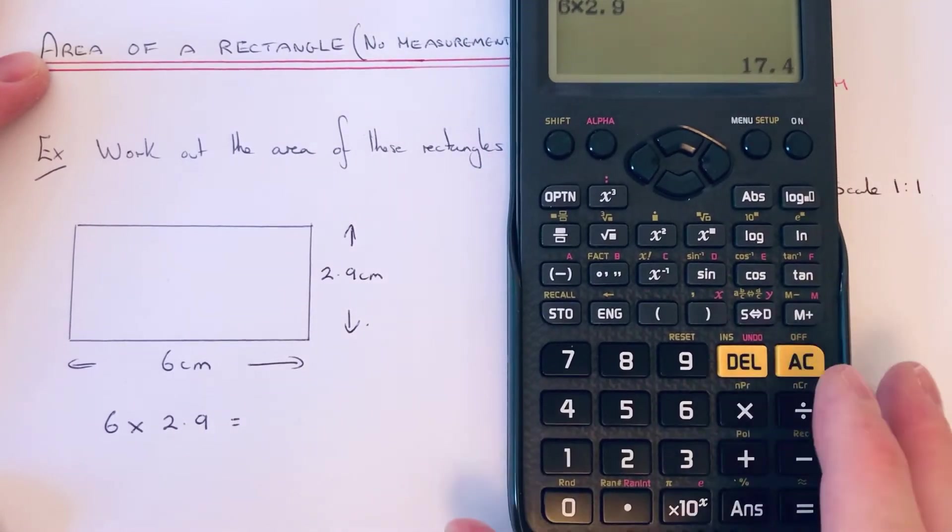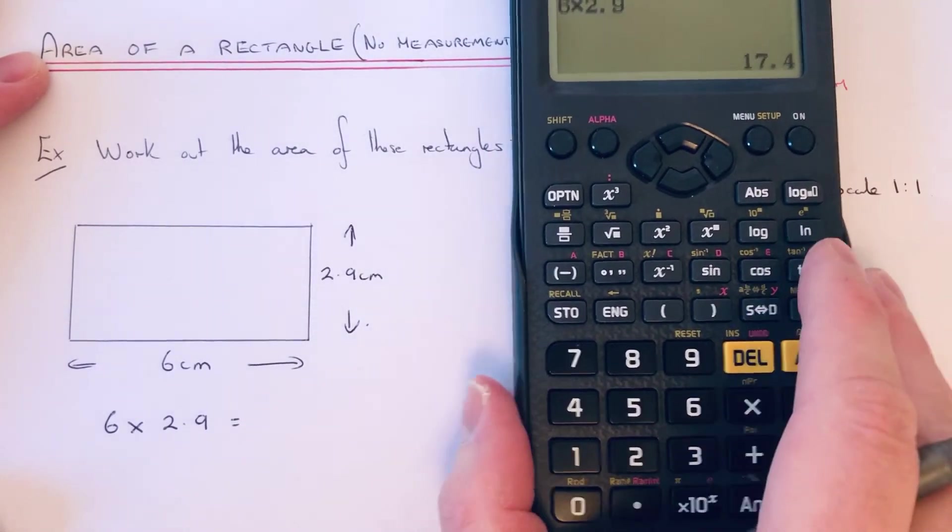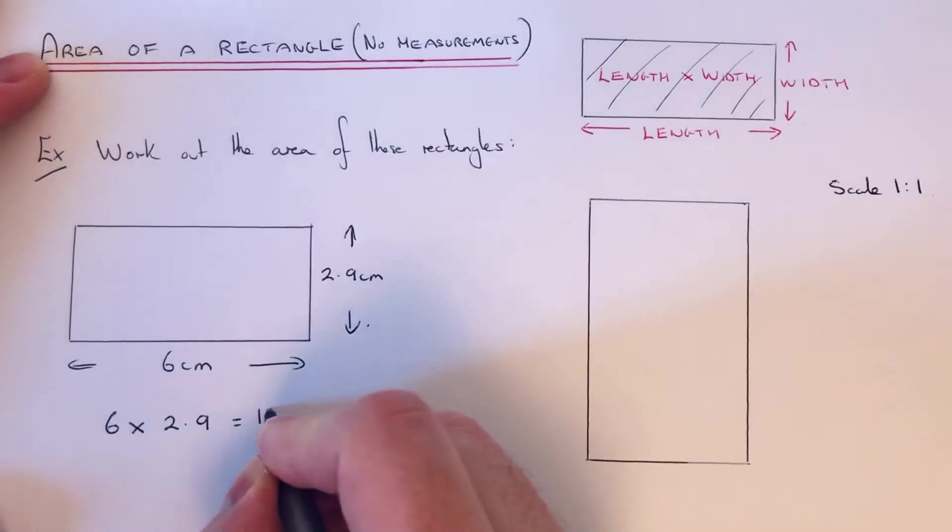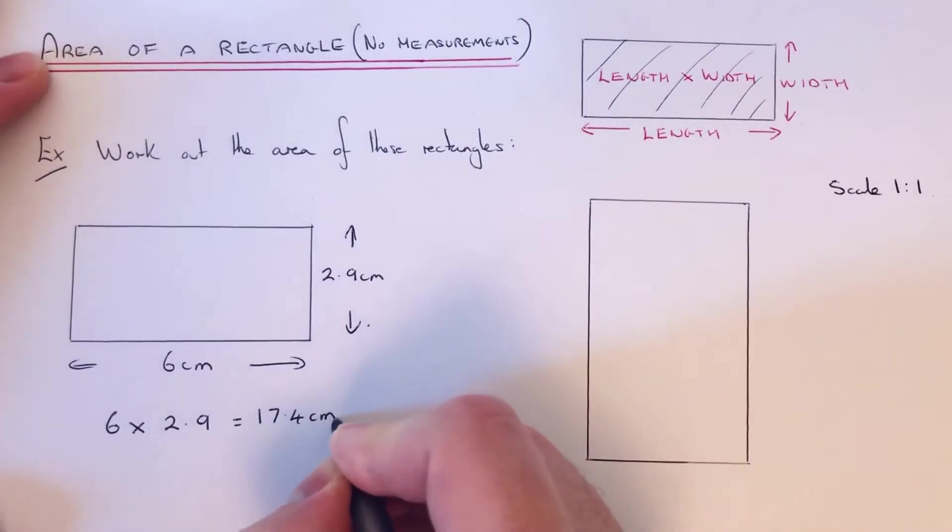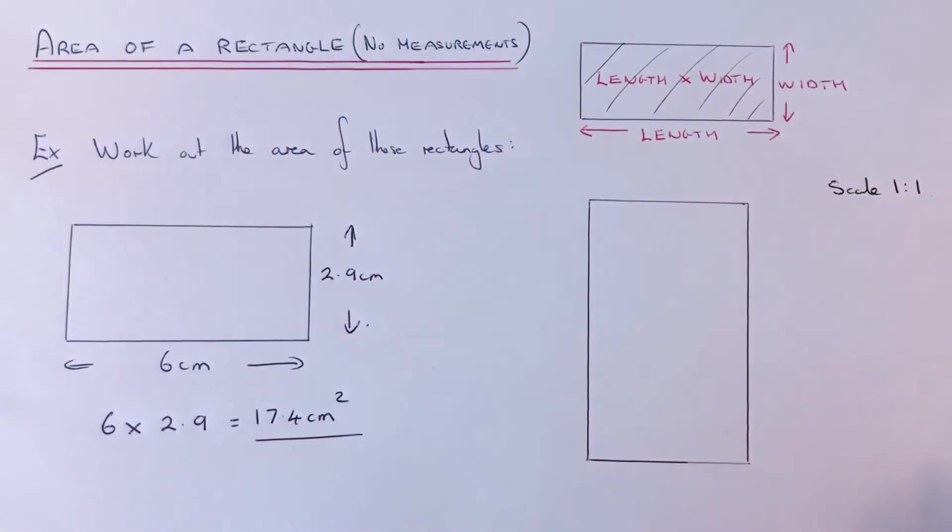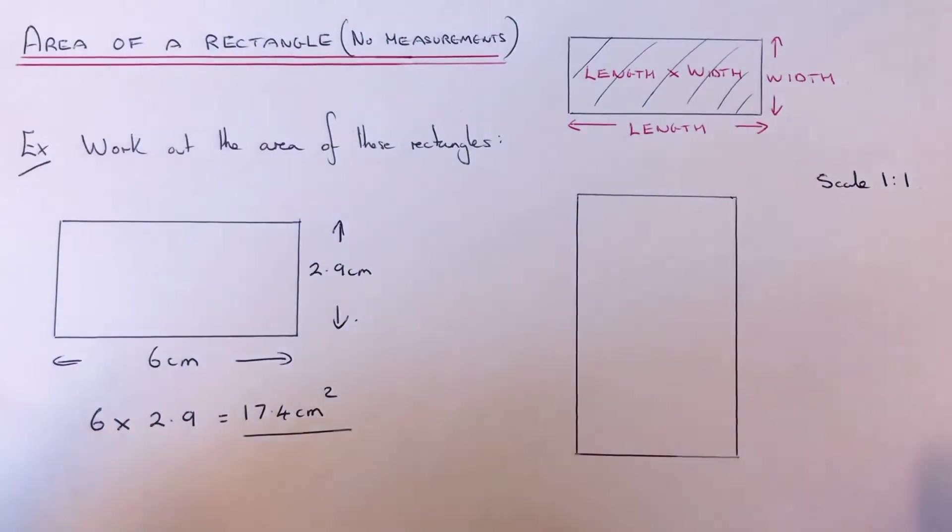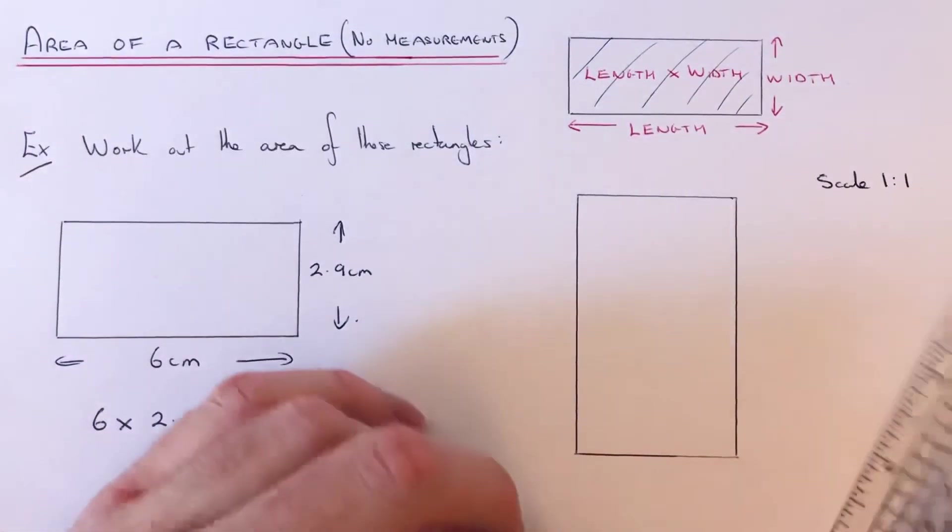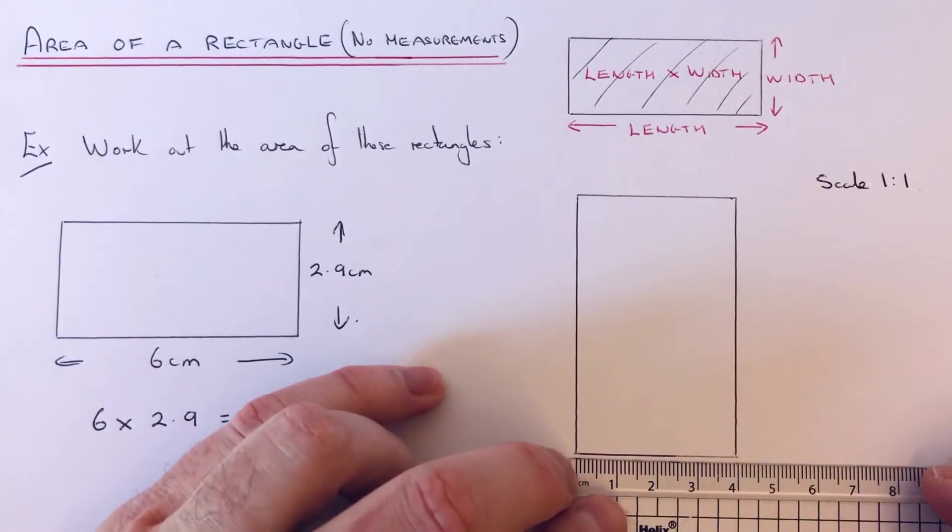That is 17.4 centimeters squared because it's an area. So let's have a look at the second example then.